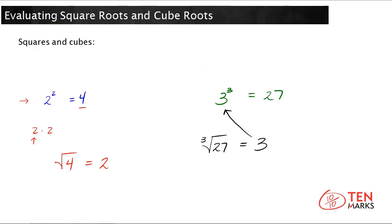There are a couple other things to pay attention to. 4 is a perfect square, which means you can take the square root of that number and get a whole number. Perfect squares are made by multiplying a whole number by itself. Similarly, perfect cubes: you can take the cube root of a perfect cube and get a whole number. You make perfect cubes by multiplying a whole number by itself 3 times.